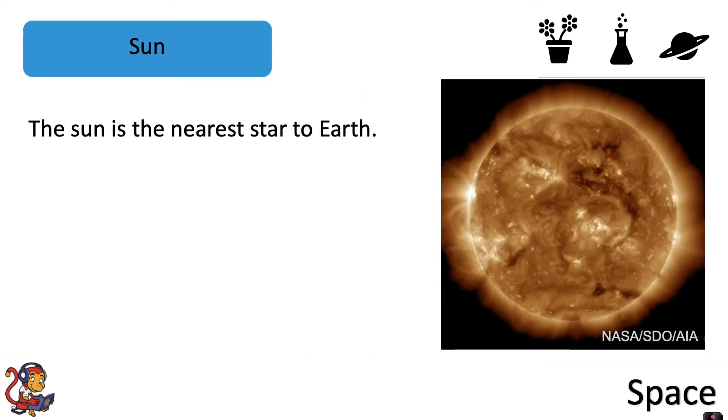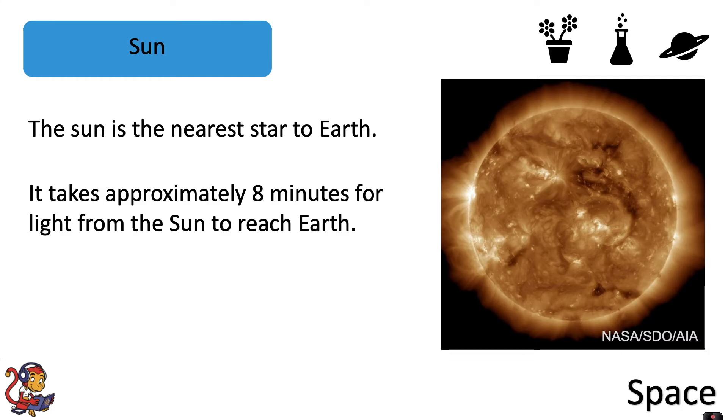The Sun is the nearest star to Earth. It takes approximately eight minutes for light from the Sun to reach Earth and the Sun forms part of our solar system.